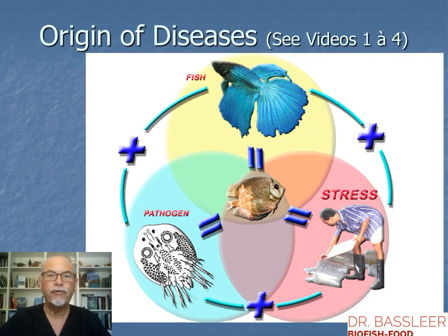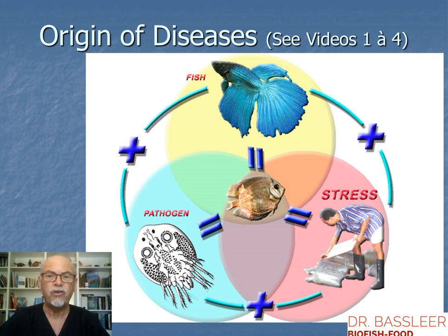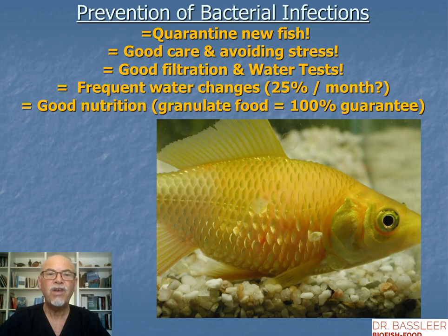The origin of fish diseases — I discussed this in my videos one to four — I recommend you see them to understand what diseases can come from. We can explain that stress is a major cause of disease that weakens the fish, so the pathogen can invade and cause an infection. And the same counts for bacterial infections.